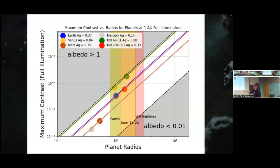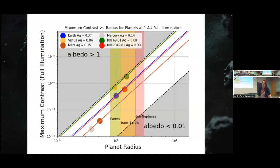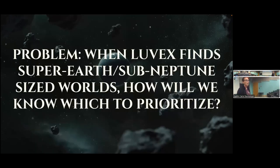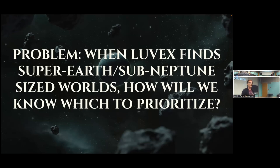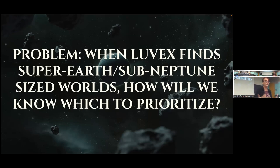If we found something at 10⁻⁹, we could follow that line across and say maybe it's an Earth, but it's probably in the super-Earth or sub-Neptune regime. If we had something at 10⁻¹⁰, that could be anything. The problem is that when LUVOIR starts discovering planets in the habitable zone, it's not going to know the mass. So we're not going to know if something is a super-Earth or a sub-Neptune, and we need to figure out how to prioritize which object to pursue.